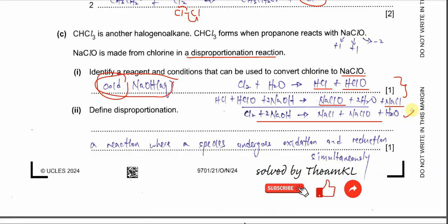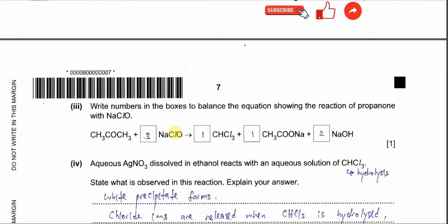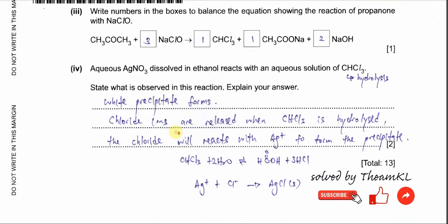The overall equation is: chlorine with sodium hydroxide forms sodium chloride and sodium chlorate(I) with water. Part 2: Define disproportionation. It is a reaction where a species undergoes oxidation and reduction simultaneously. Here, chlorine starts at oxidation number 0 and ends as −1 and +1, so it undergoes both reduction and oxidation at the same time.